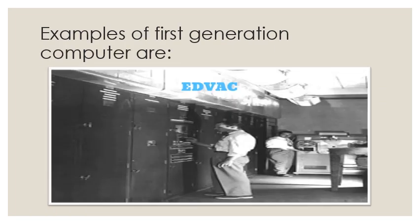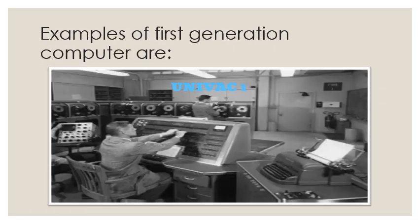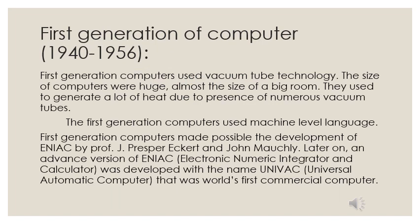ENIAC, EDVAC, and UNIVAC 1 are examples of first generation computers. First generation computers used vacuum tube technology. The size of these computers was huge — almost the size of a big room. They used to generate a lot of heat due to the presence of numerous vacuum tubes.